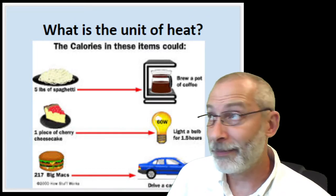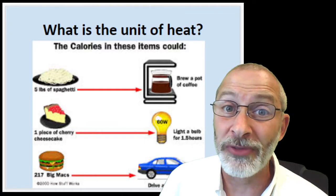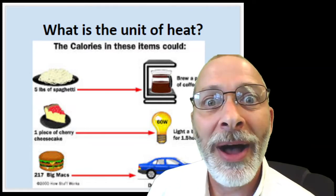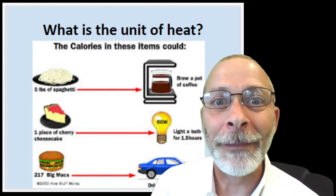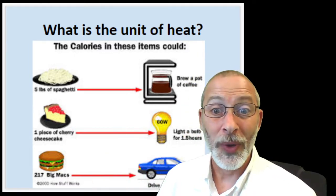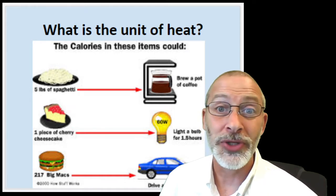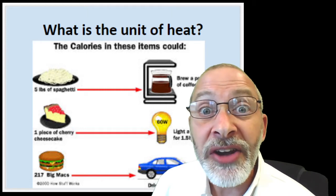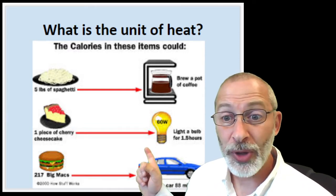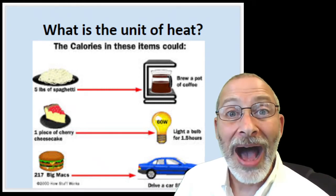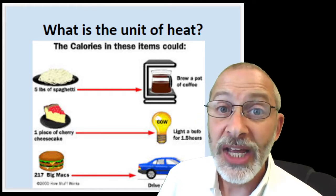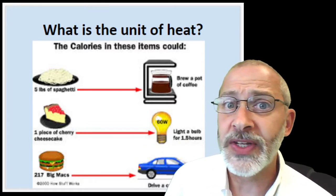My weakness really is ice cream, but I also have a weakness for pies, especially this time of year. I love pumpkin pie, apple pie, and cherry pie with chocolate ice cream. But a piece of cherry cheesecake would be nice too. One slice of cherry cheesecake actually has the same amount of energy stored in it that it would take to light up a 60-watt incandescent light bulb for an hour and a half. I would be happy to eat your cherry cheesecake if it means keeping your house lit!